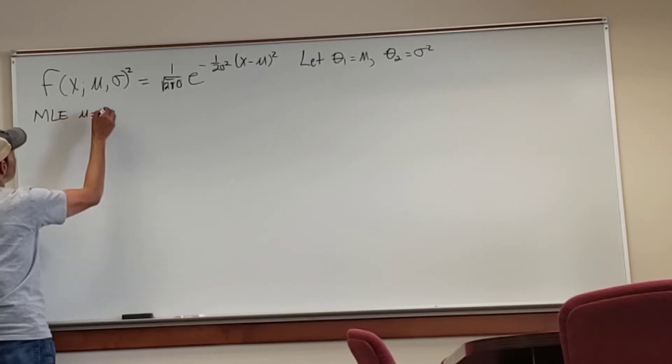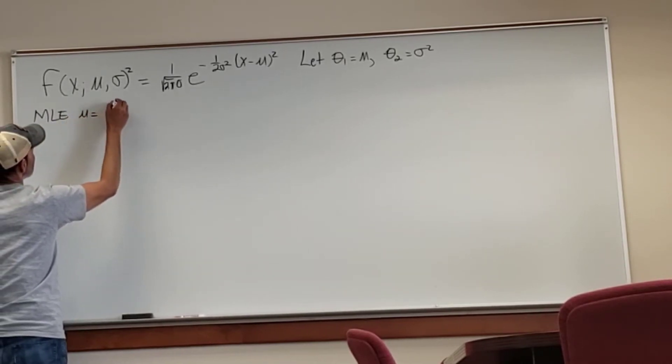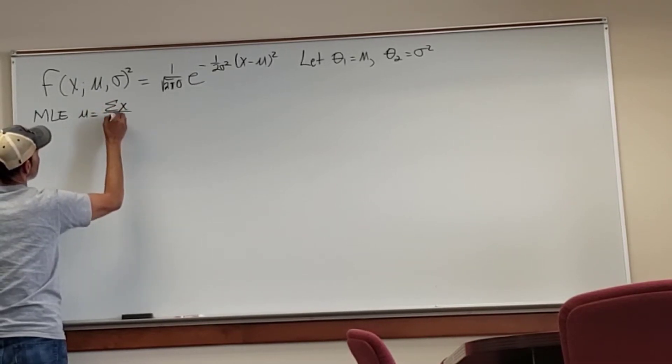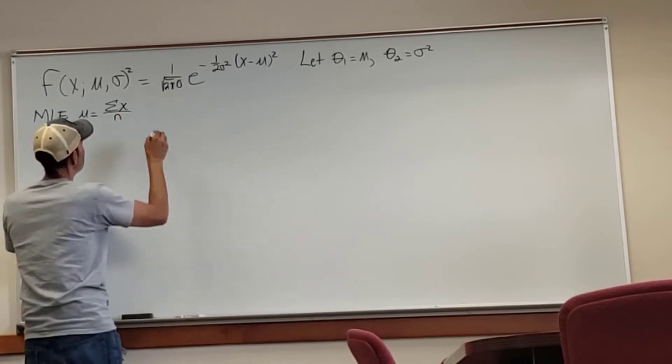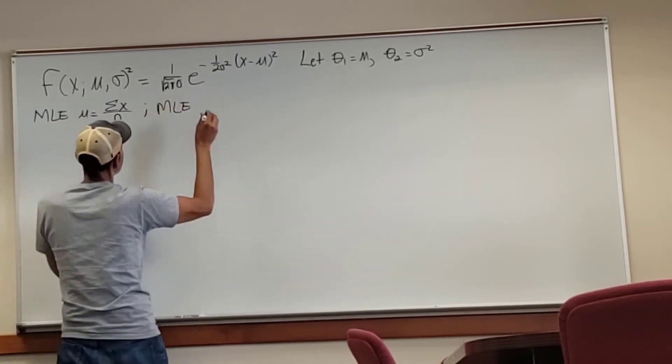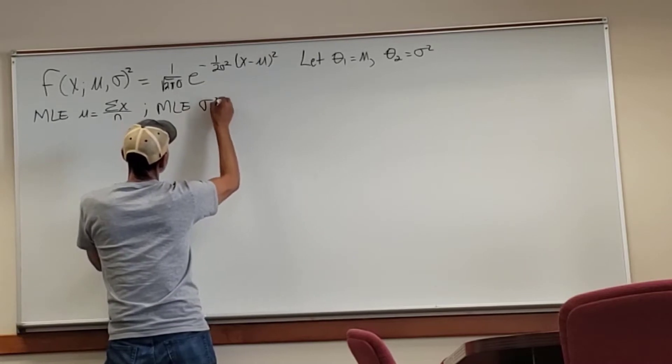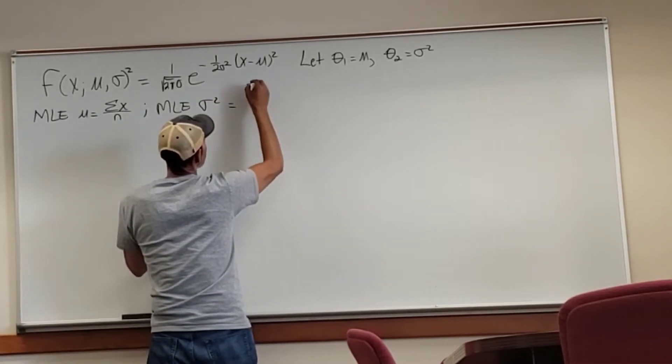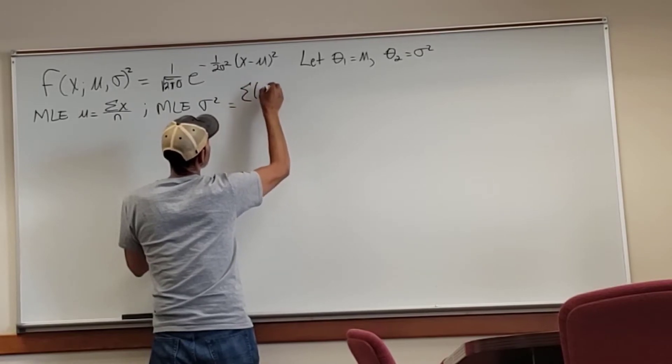The MLE, maximum likelihood estimate, of the mean is mu equals sigma x over n, which is just basically how you calculate the mean. You sum up all values and divide by the number of items. And for the variance,